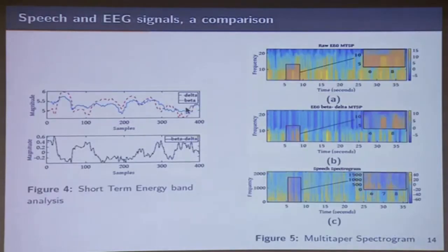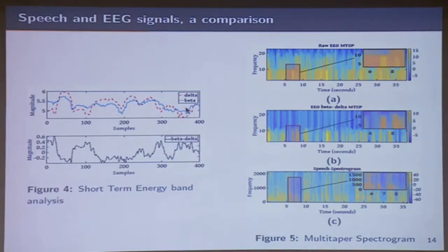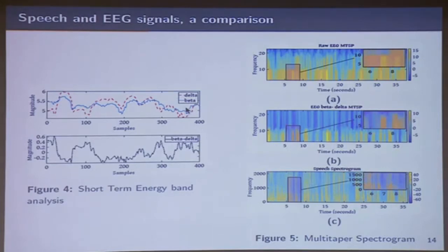Here is an example: we extract what is called a multi-taper spectrogram — I'll talk about this a little bit later. This is a raw EEG spectrogram, and there is a beta-minus-delta component. If you notice, there are some blanks in between which correspond to silences, and this is the speech spectrogram which also shows blanks like silences. We spent a tremendous amount of time — almost eight to ten months of effort — before we got to the right feature extraction from the EEG signal for analysis.